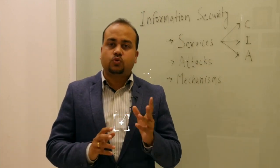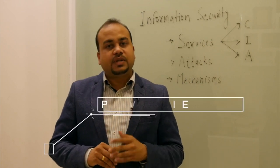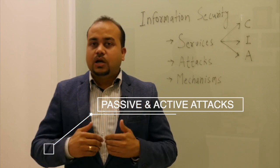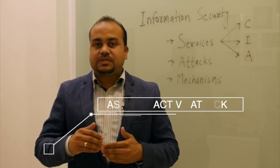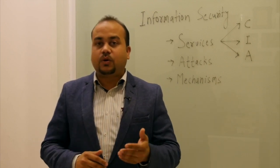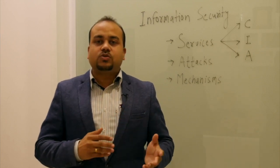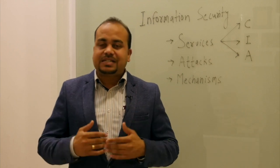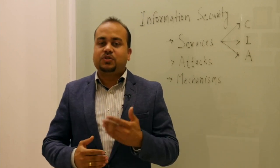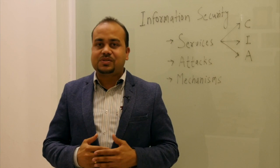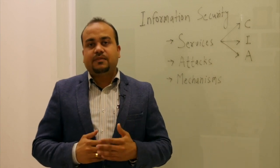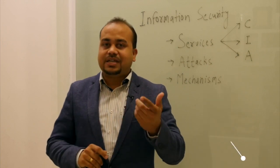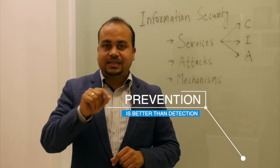Now we'll come to the attacks part. Broadly speaking, there are two kinds of attacks: passive attack and active attack. As the name implies, in a passive attack you won't be able to know you're being attacked, because if somebody is eavesdropping on your data or communication you will not be able to find that you are being monitored — it's like tapping a phone, as we often see in movies. Passive attacks are very hard to detect, so prevention is recommended rather than detection.